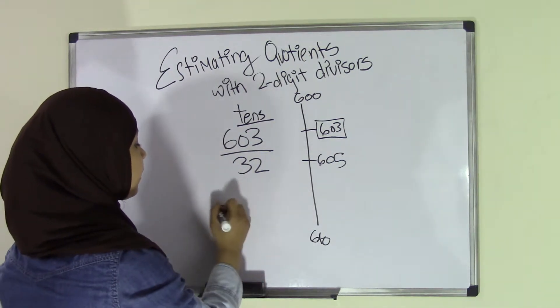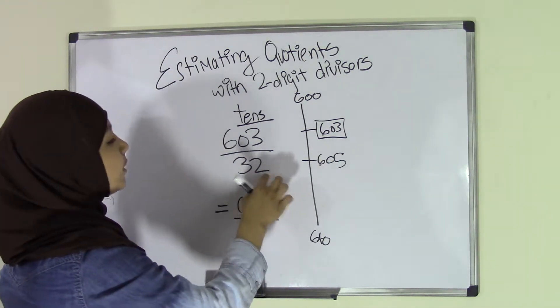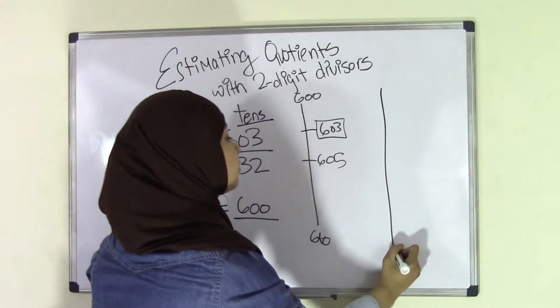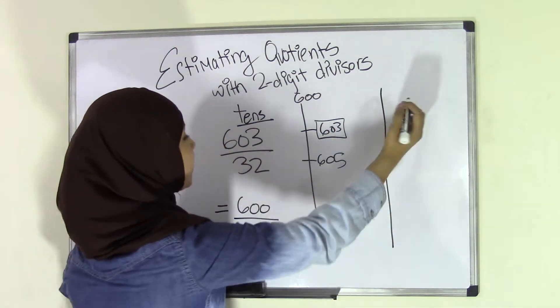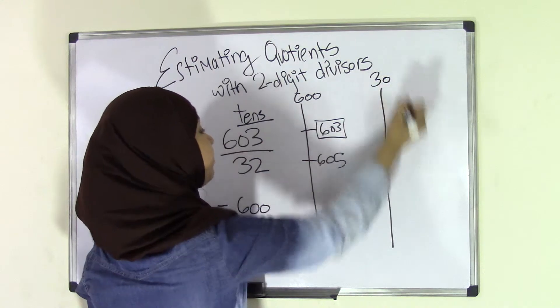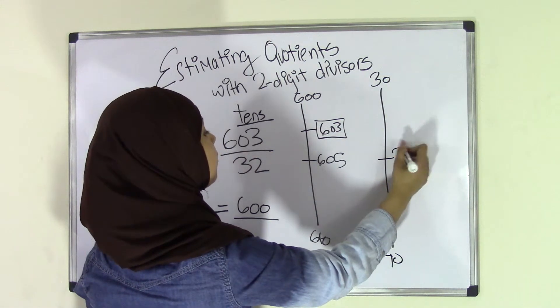Therefore, we will round this to 600. And 32, we're going to do the same thing for 32. We're going to make a line. Here will be 30, and here is going to be 40. Middle is going to be 35.